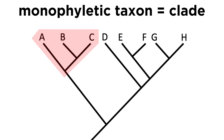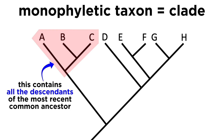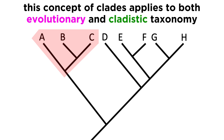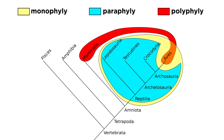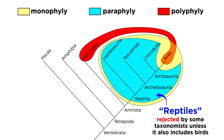As we can now understand, the term monophyletic taxon is synonymous with the term clade — they mean the same thing: a group of organisms that represent all of the descendants of their most recent common ancestor. Monophyletic groups, or clades, are therefore a part of both evolutionary and cladistic taxonomy. A major goal of taxonomists is to determine which groups are monophyletic, paraphyletic, or polyphyletic. Since the term reptile is paraphyletic, it is rejected by some taxonomists unless it also includes birds.